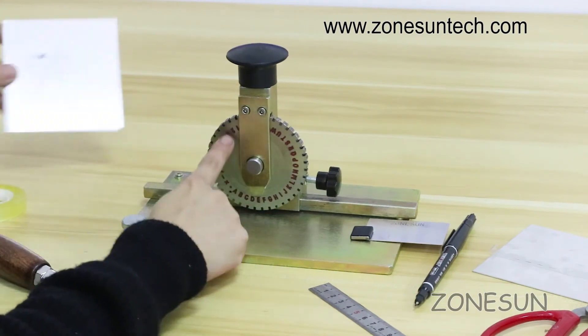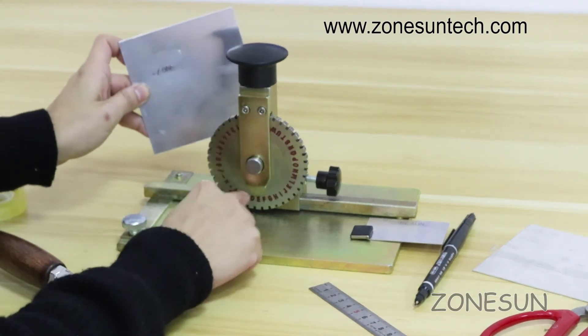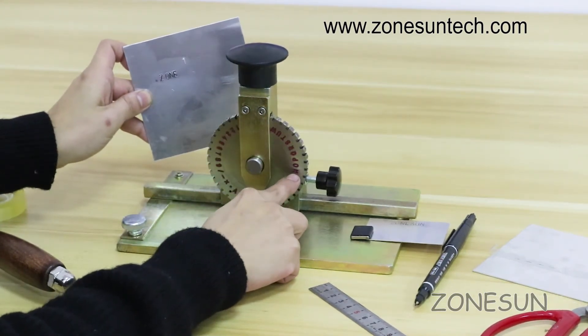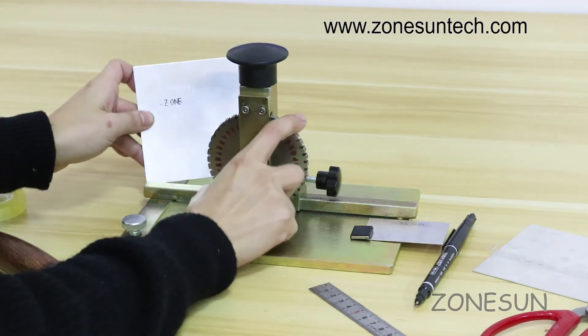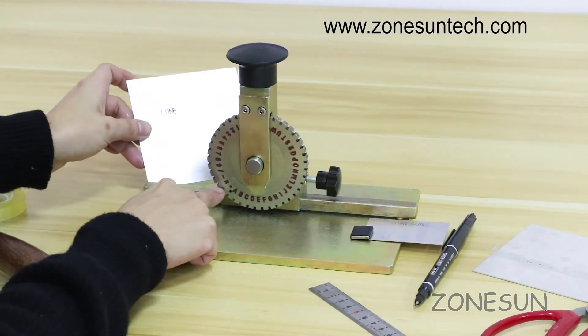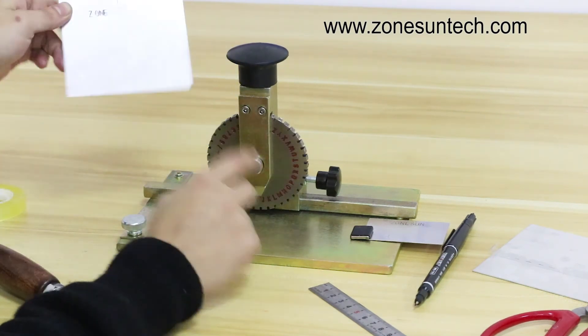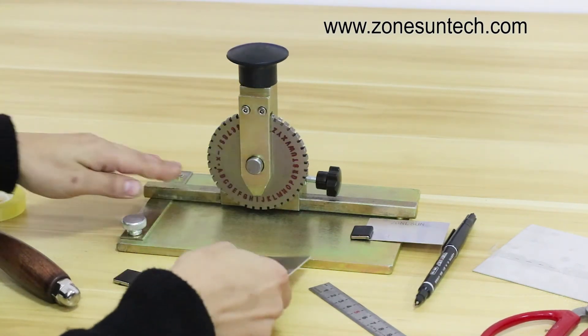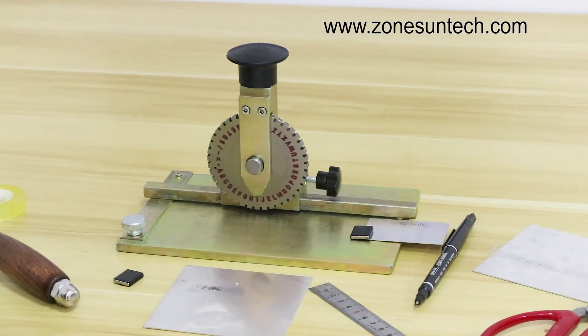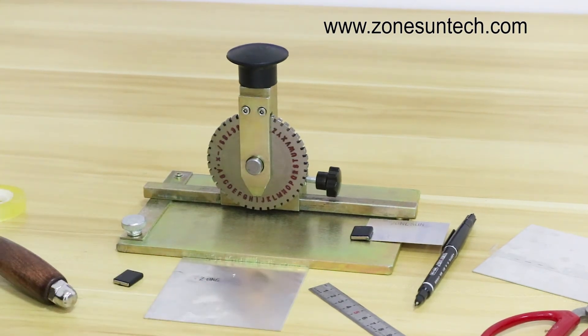Also you have 10 numbers and 26 alphabet letters with four symbols here so you can just choose whatever alphabet you like to make your own design. That's all. Thank you for watching. Any questions, please feel free to contact us.